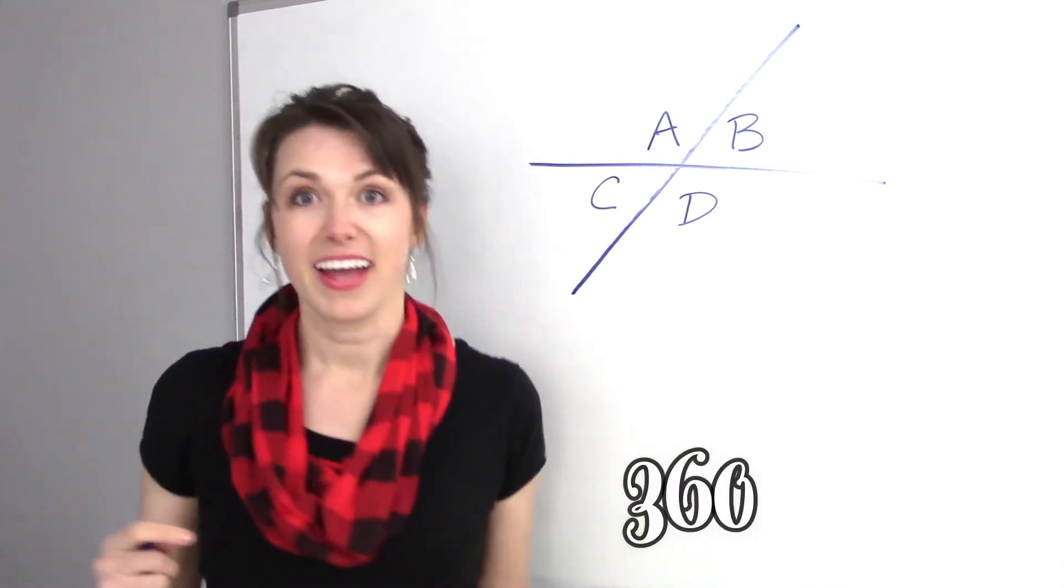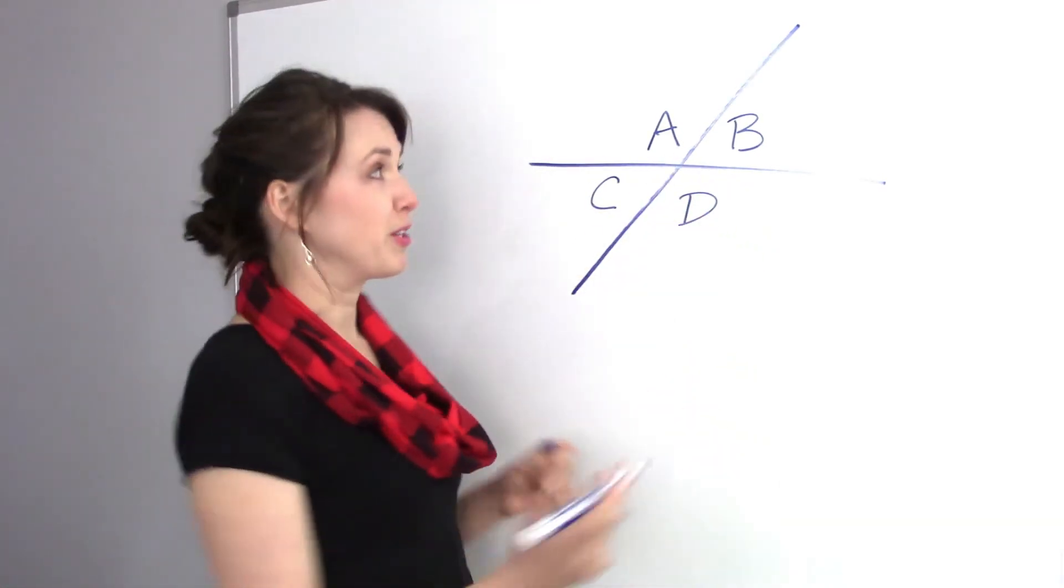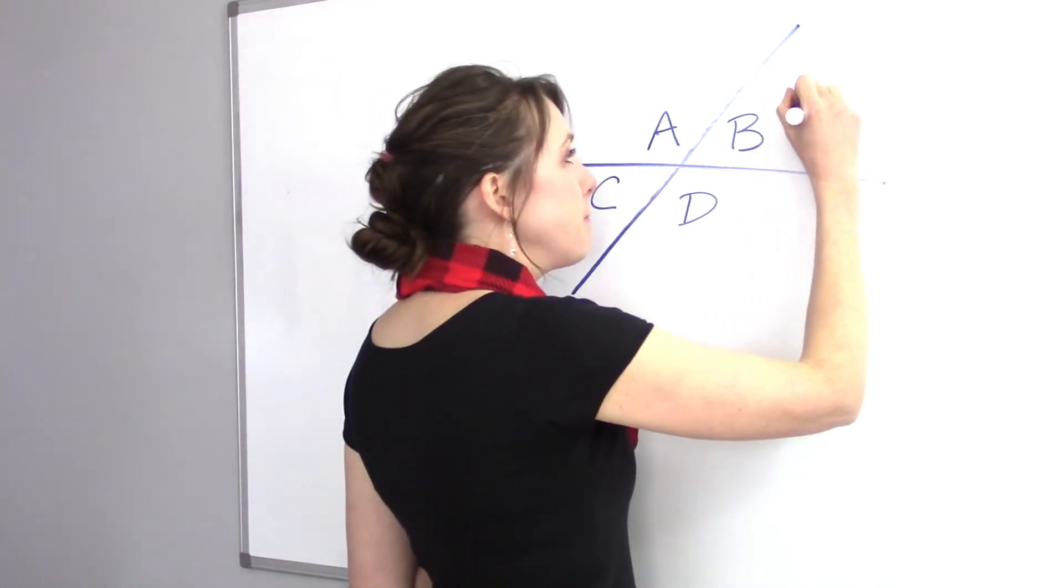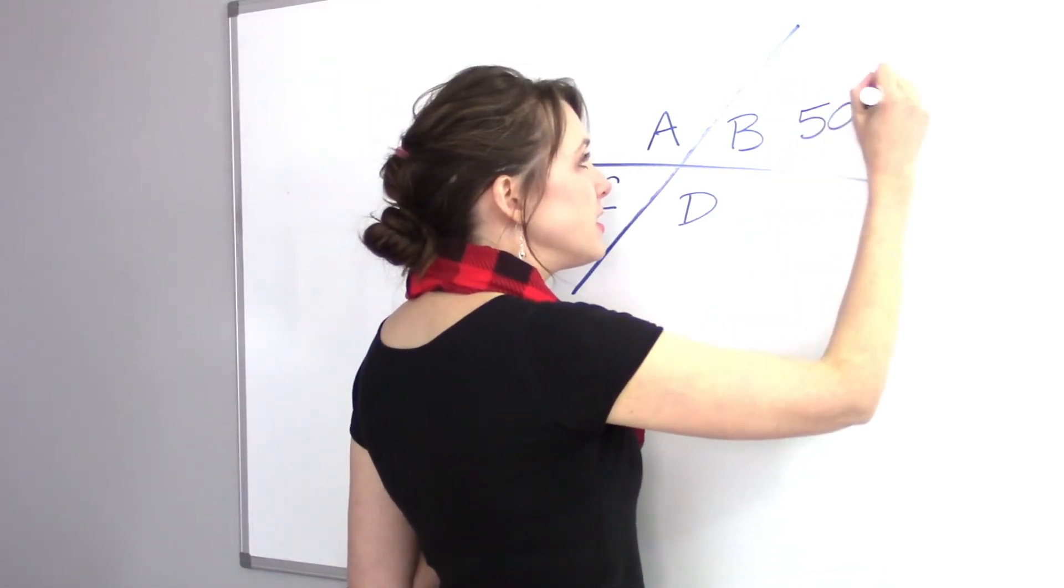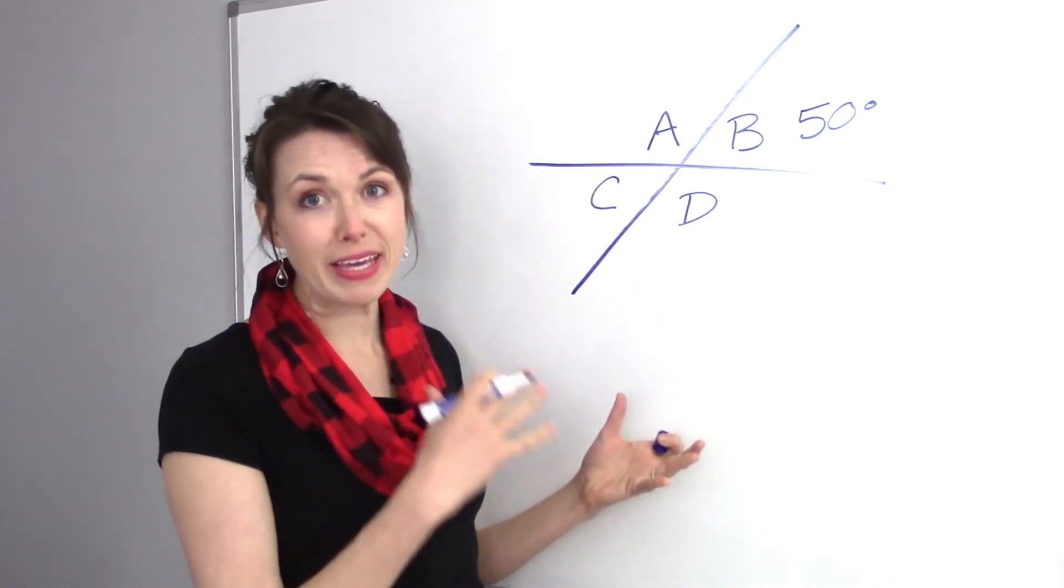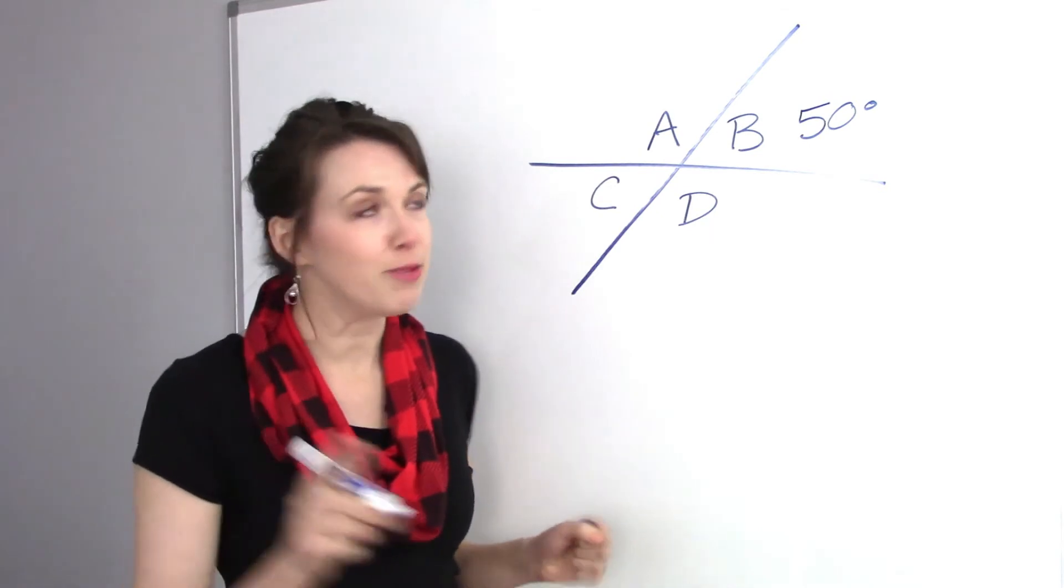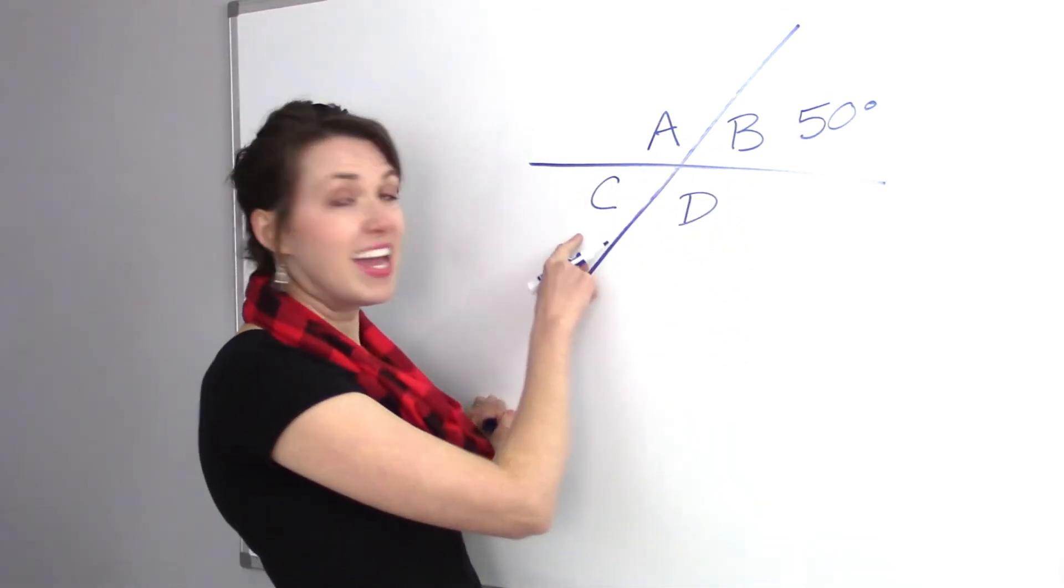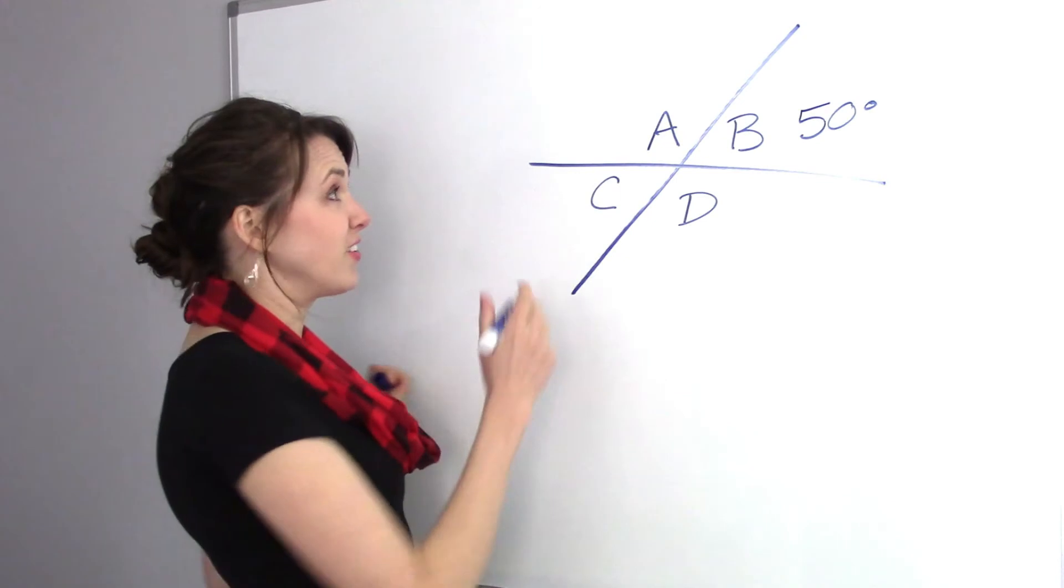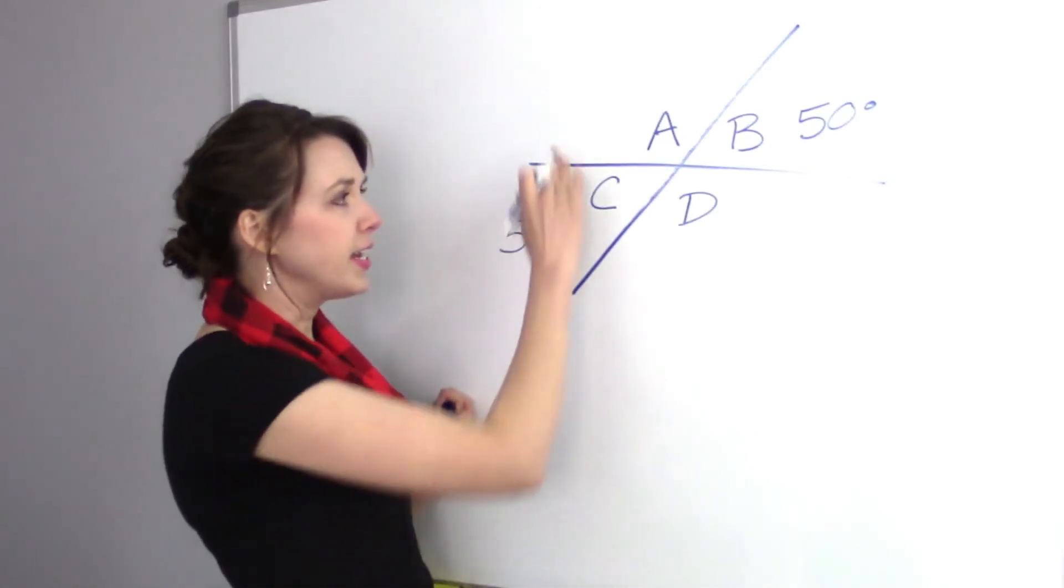Remember, 360. So let's just make up some numbers for these. Let's say B is 50 degrees. All I need to know is what B equals. And then I can figure out everything else. Now, I mentioned before that right across from B is C. And they're going to be the exact angles. So C is also 50 degrees.